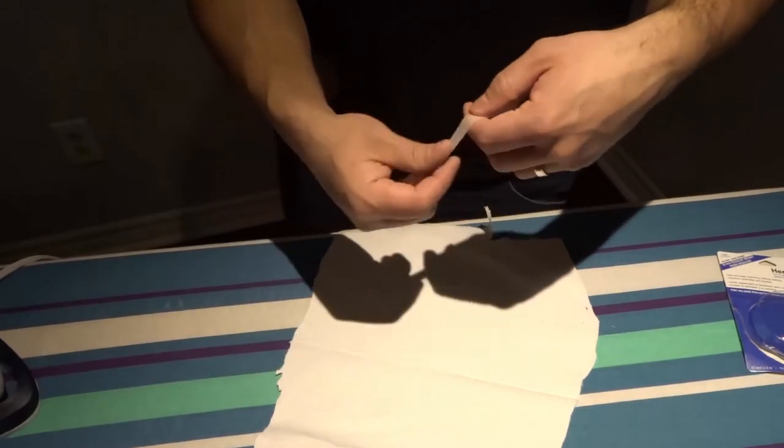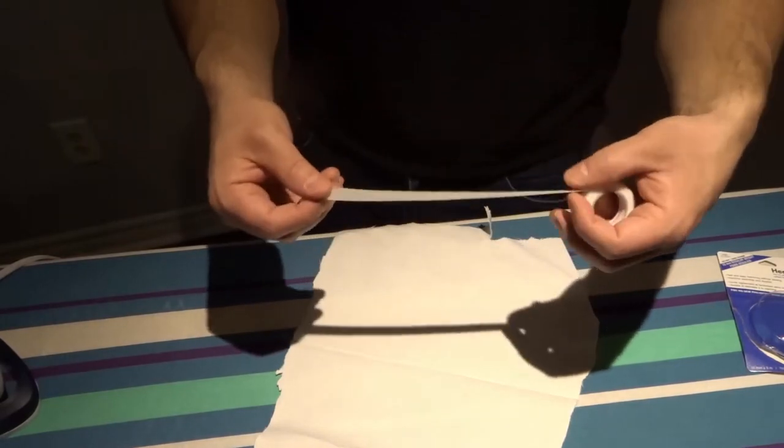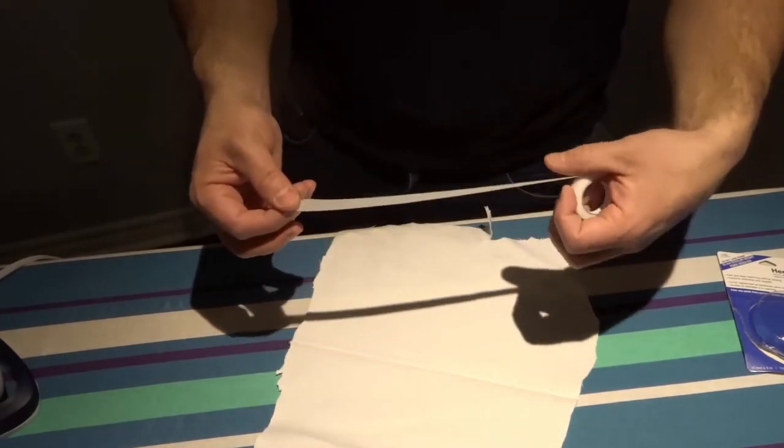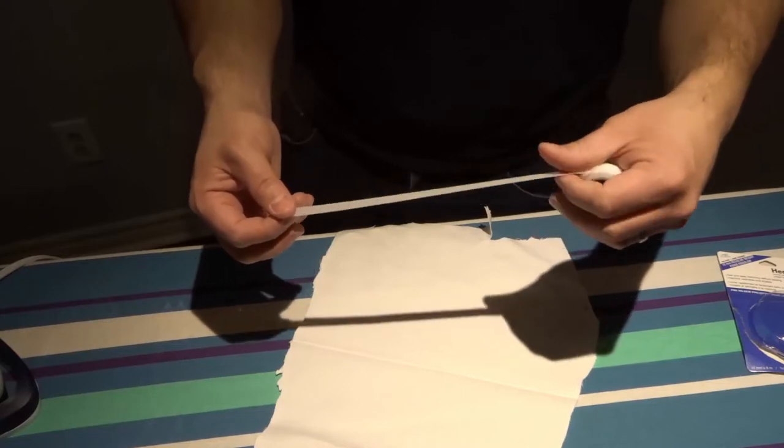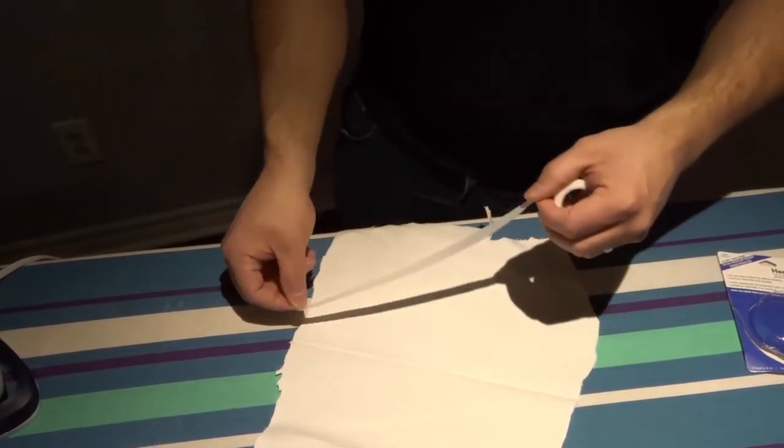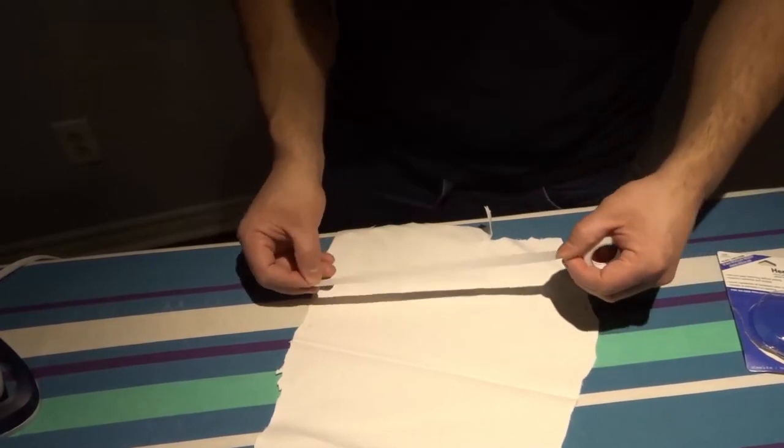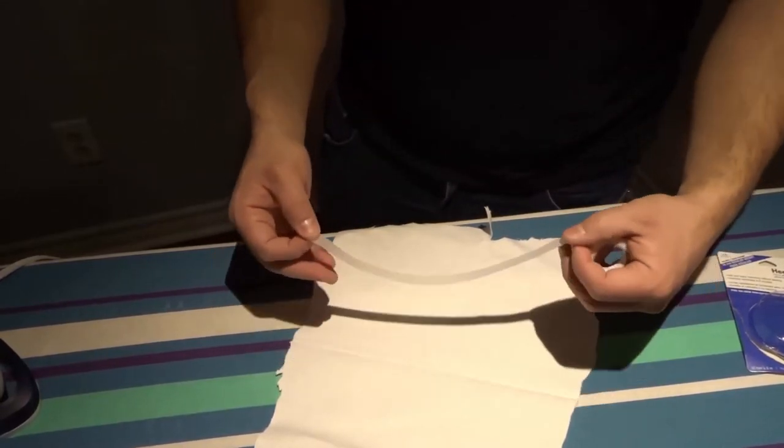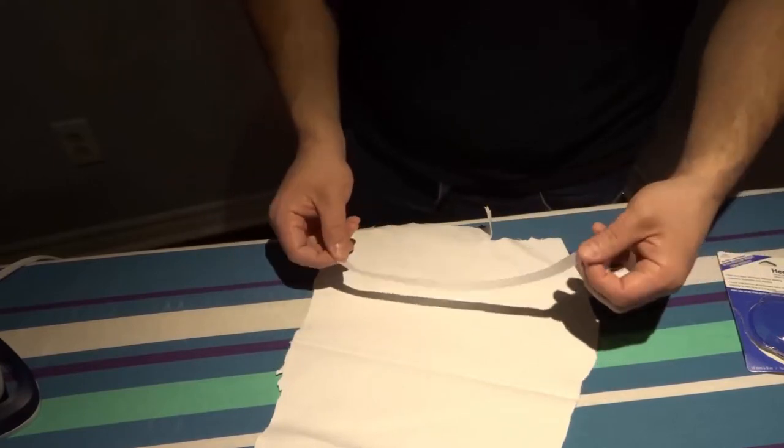Then what you want to do is get your tape. The good thing about these iron-on tapes, these no-sew hemming tapes, is that it doesn't matter which way you put them. So you want to go all the way from one end to the other and you want to place it I would say about a quarter of an inch to half an inch above the hemline.